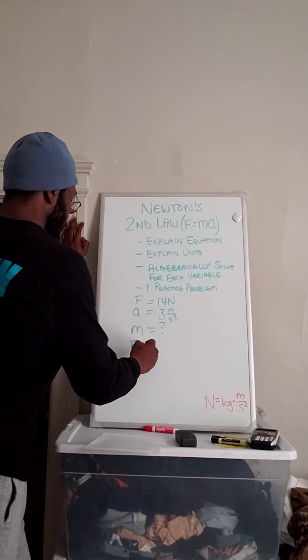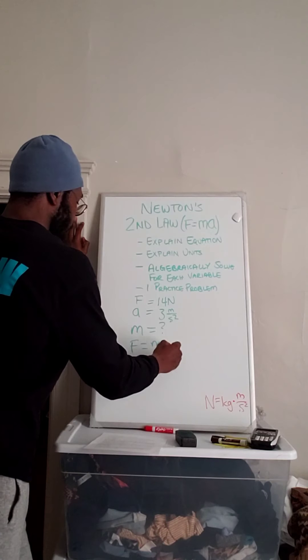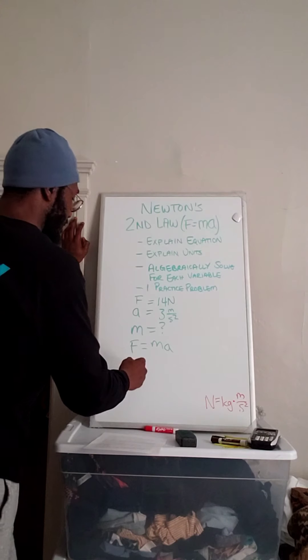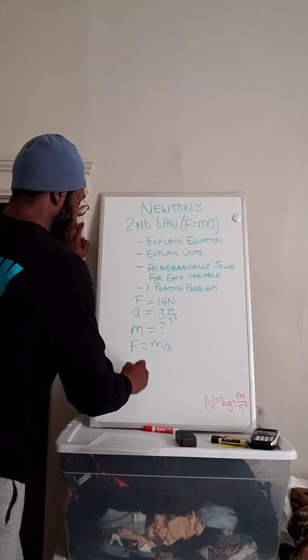Next, we choose an equation. So F equals MA. Now we know we're trying to get M by itself, so we can divide by A on both sides.